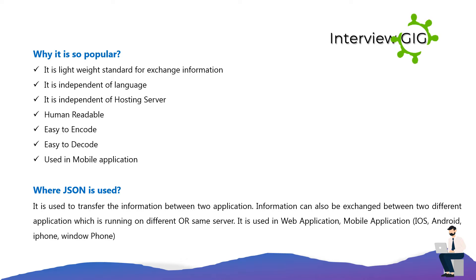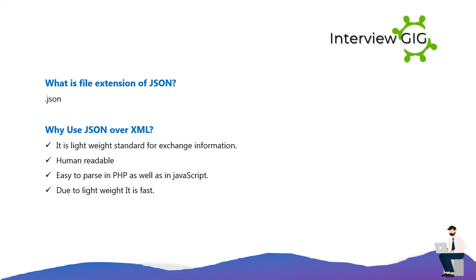Where is JSON used? It is used to transfer information between two applications. Information can also be exchanged between two different applications running on different or the same server. It is used in web applications and mobile applications including iOS, Android, iPhone, and Windows Phone. The file extension of JSON is .json.